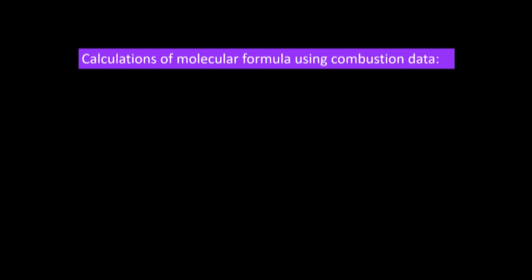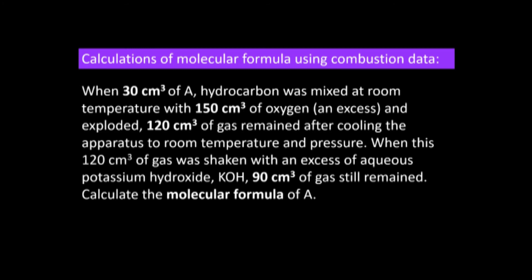Calculation of molecular formula using combustion data — this is challenging for many candidates. A gaseous hydrocarbon compound A: 30 cm³ of A is burned in 150 cm³ of oxygen. The output gases are carbon dioxide and excess oxygen; water is liquid at room temperature and pressure. The total volume of CO₂ and excess oxygen is 120 cm³.